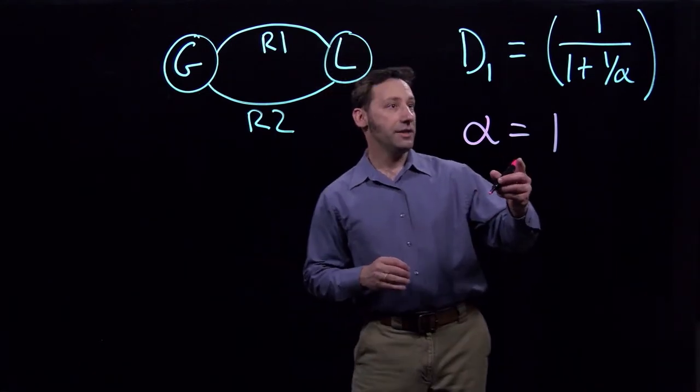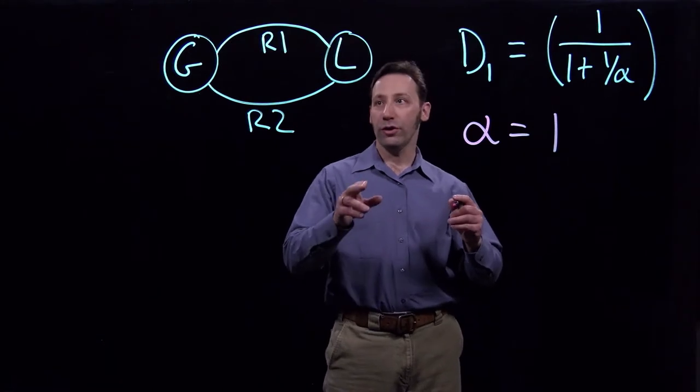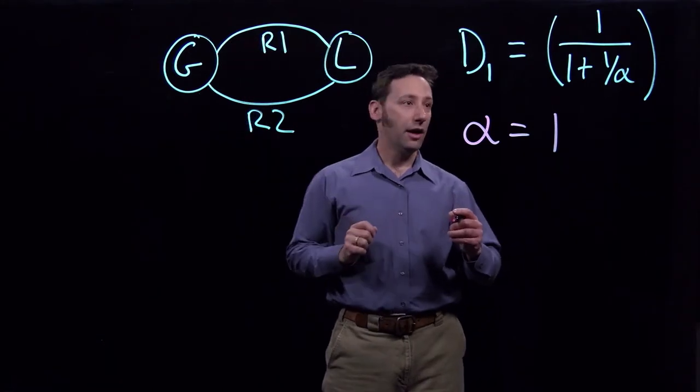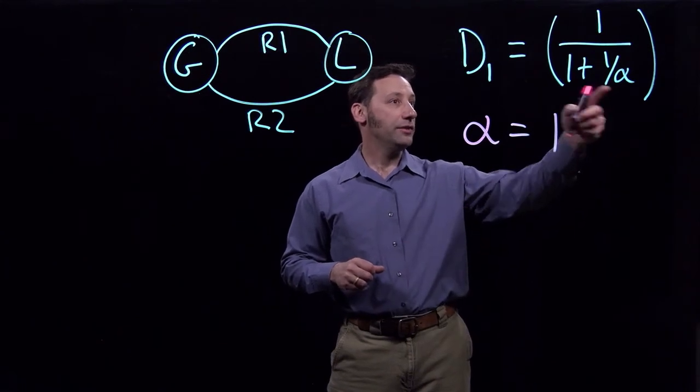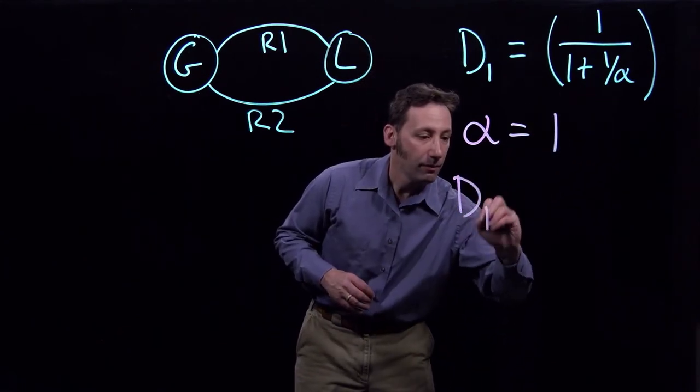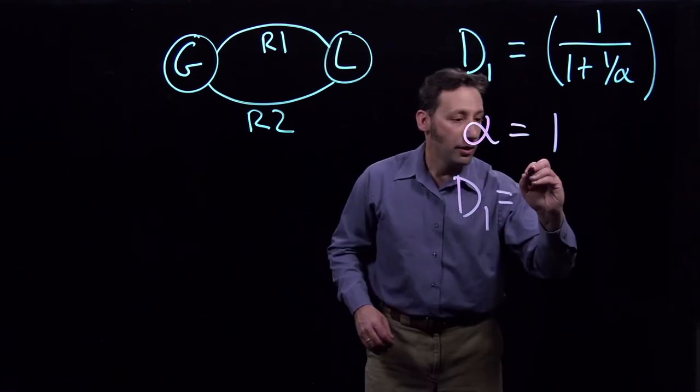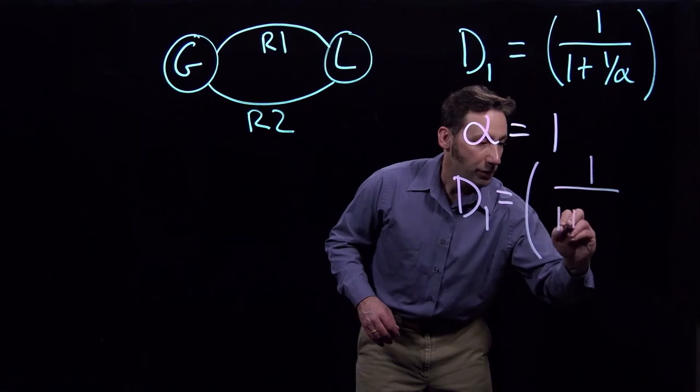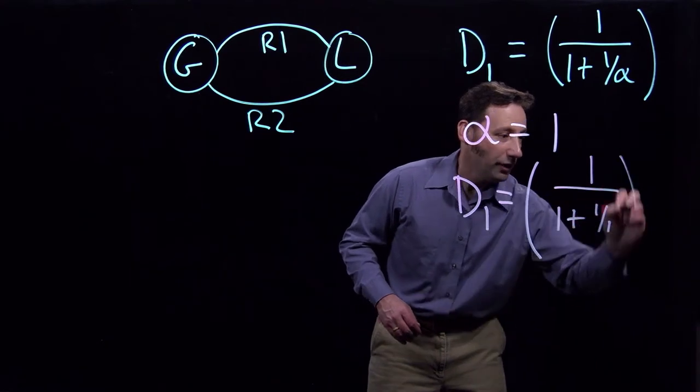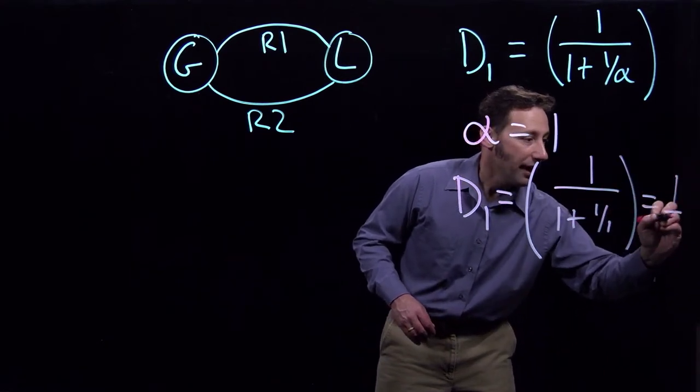So to calculate D1, the proportion of power that flows on this line right here, we're going to plug alpha equals 1 into the formula for D1. And so what we're going to get is 1 over 1 plus 1 over 1, which is just equal to 1 half.